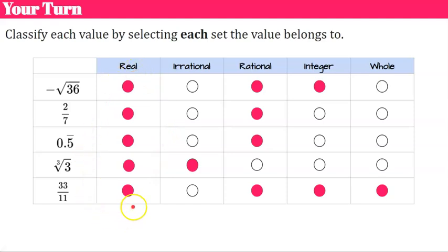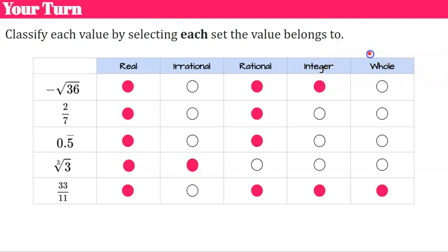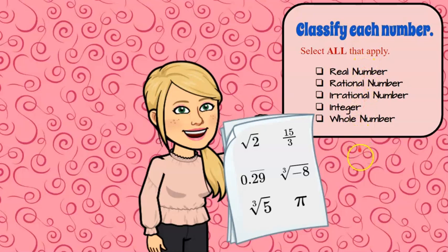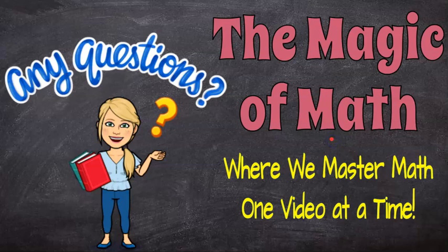Remember, all of these numbers were real. Only one ended up being irrational. Once you decide whether a number is irrational or rational, if it's irrational you're done; if it's rational, ask yourself — is it an integer, and is it a whole number? That is how you classify real numbers. Thank you for joining me at the Magic of Math, where we continue to master math one video at a time.